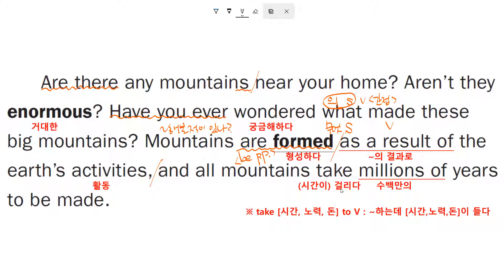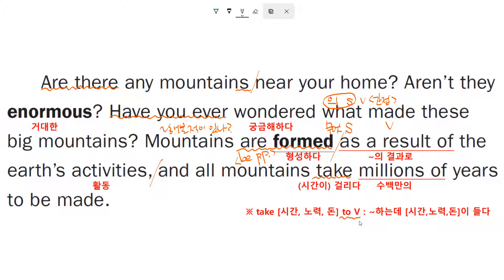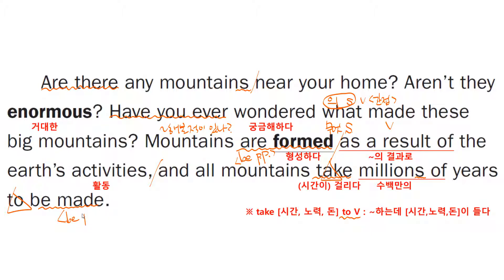And all mountains take millions of years to be made. — 모든 산들은, 이때 'take'는 시간이 걸리다. 'Take' 다음에 시간이나 노력이나 돈이 올 수 있어요. 그 다음에 'to부정사'가 옵니다. 'Take millions of years' — 'millions of'에서 's' 주의해주고, 수백만 년의 시간이 걸립니다. 'To be made' — 'to부정사'가 왔고, 산은 만들어지는 거니까 이것도 마찬가지로 수동태의 구조입니다. 산이 만들어지는 데는 수백만 년의 시간이 걸린다.